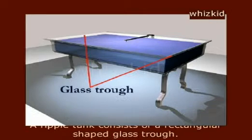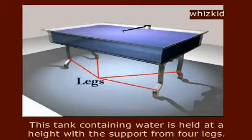A ripple tank consists of a rectangular shaped glass trough. This tank containing water is held at a height with support from four legs.